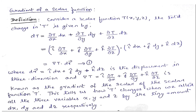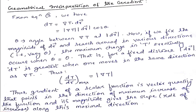Now let us move on to the geometrical interpretation of the gradient. As seen in my previous slide, dT can be written as delta T dot dr. One thing you should remember: I have not given an arrow above this delta, but the del operator is a vector. So this should be a vector quantity. This dT can be written as delta T dot dr. If I want to write it in magnitude form, I can write it as |delta T| |dr| cos theta, where theta is the angle between delta T and dr.